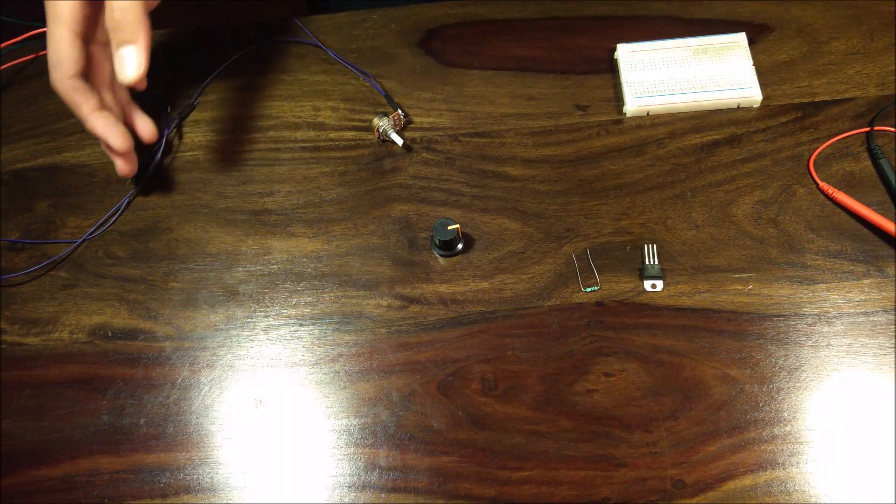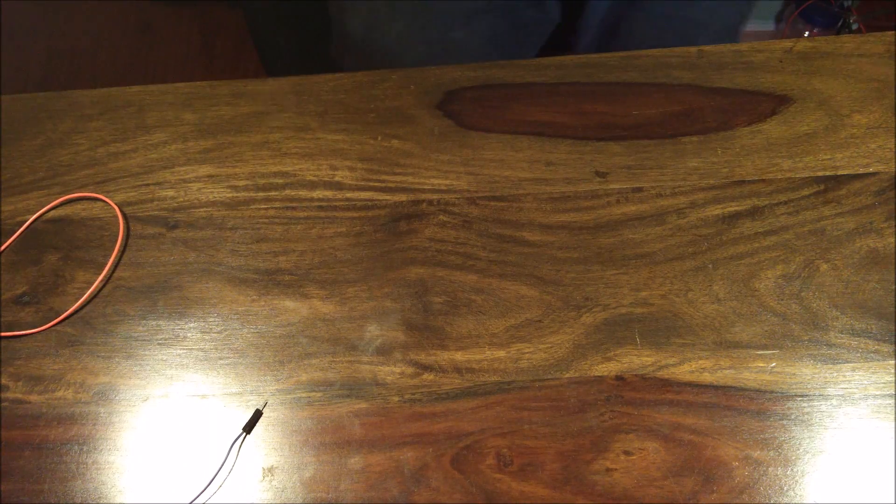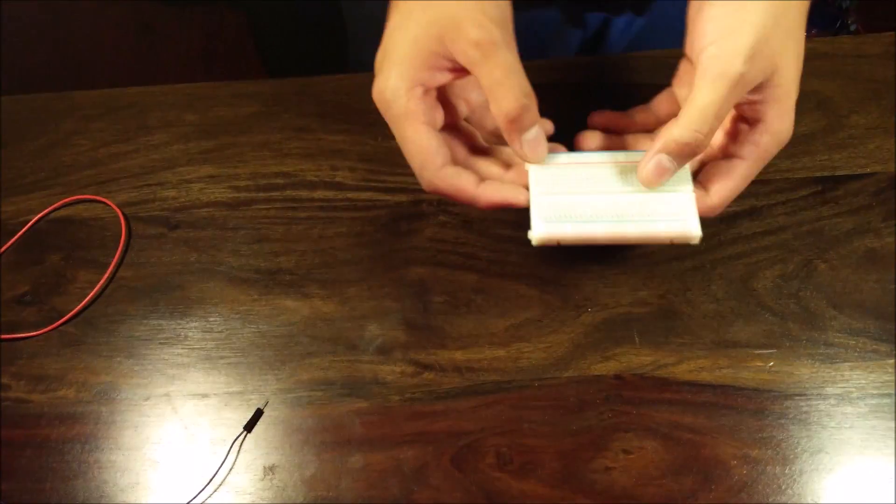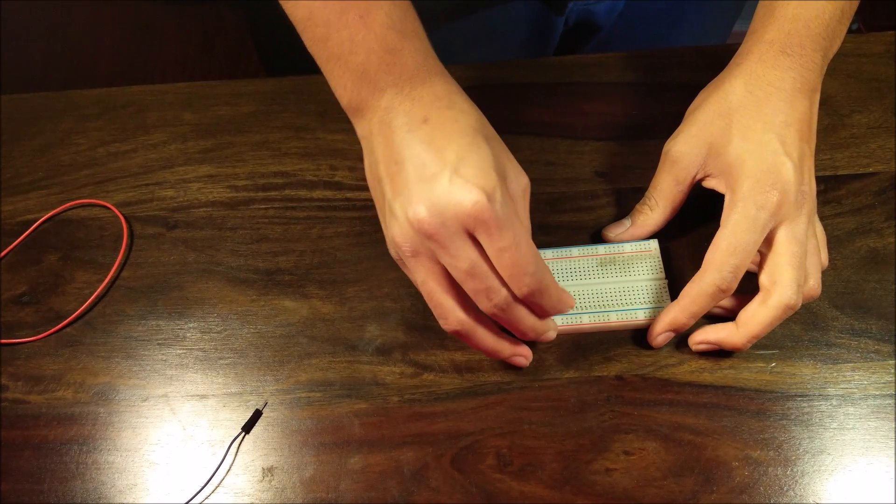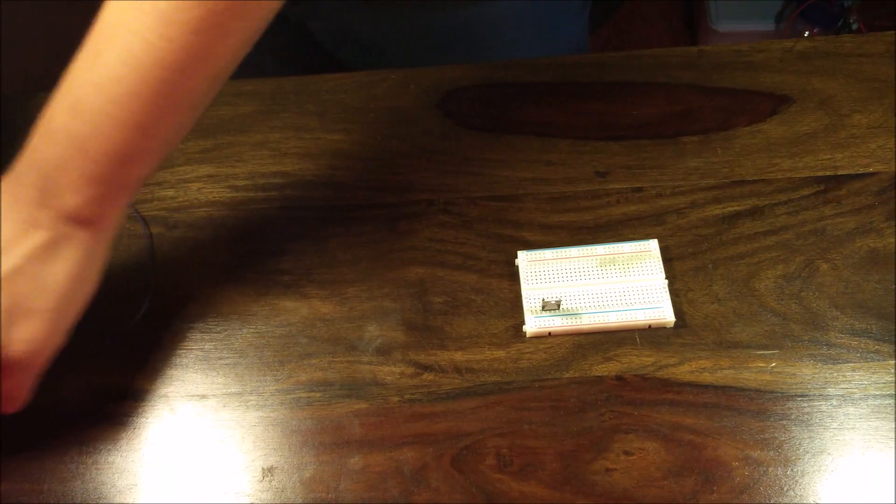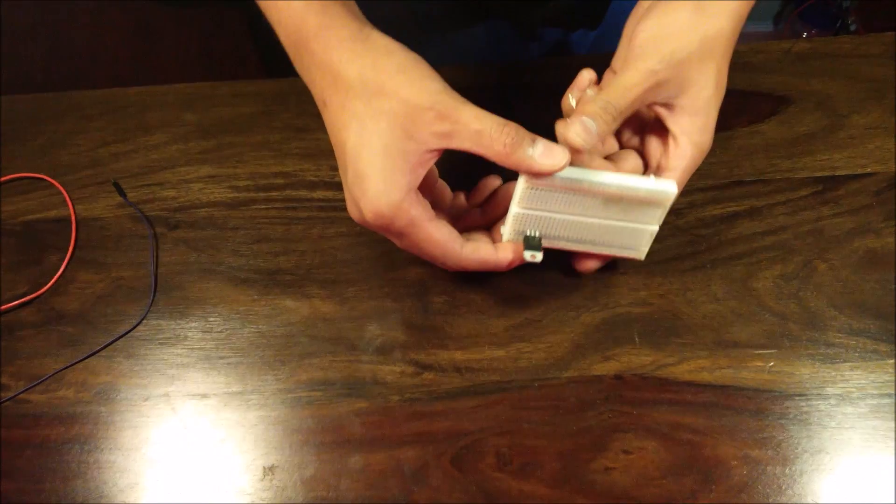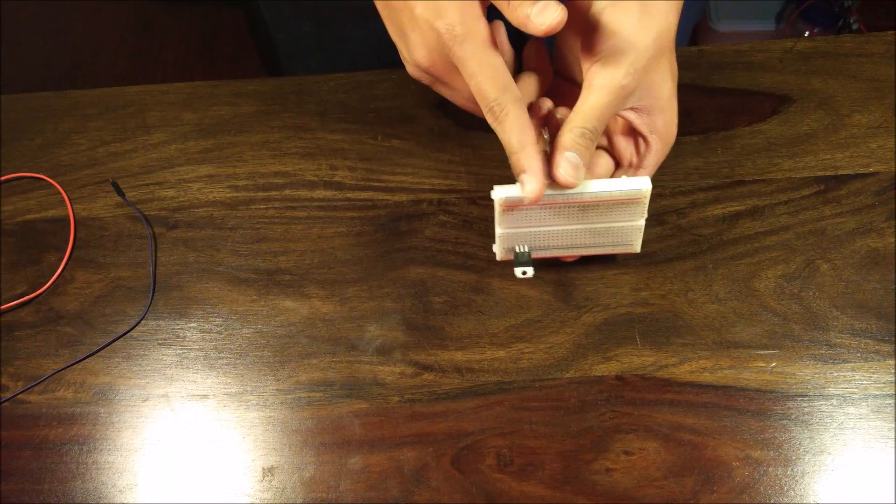Let's get started with the build. Okay so we're going to start off our build by using a breadboard. Now to the breadboard we'll be attaching this LM317. Now the LM317 in the order of pins 3 to 1 is input, output, and regulation.